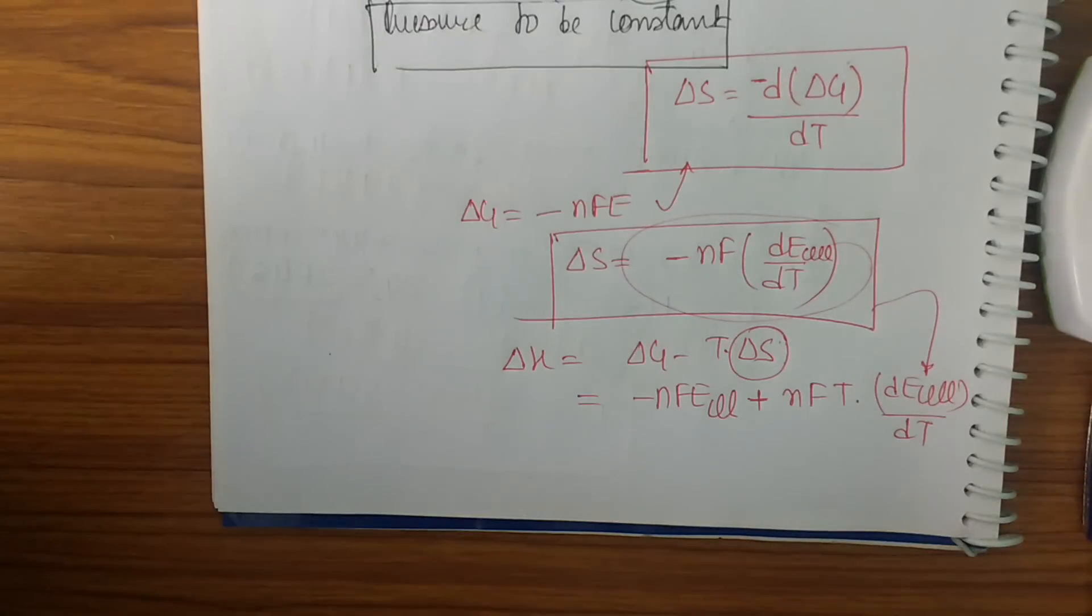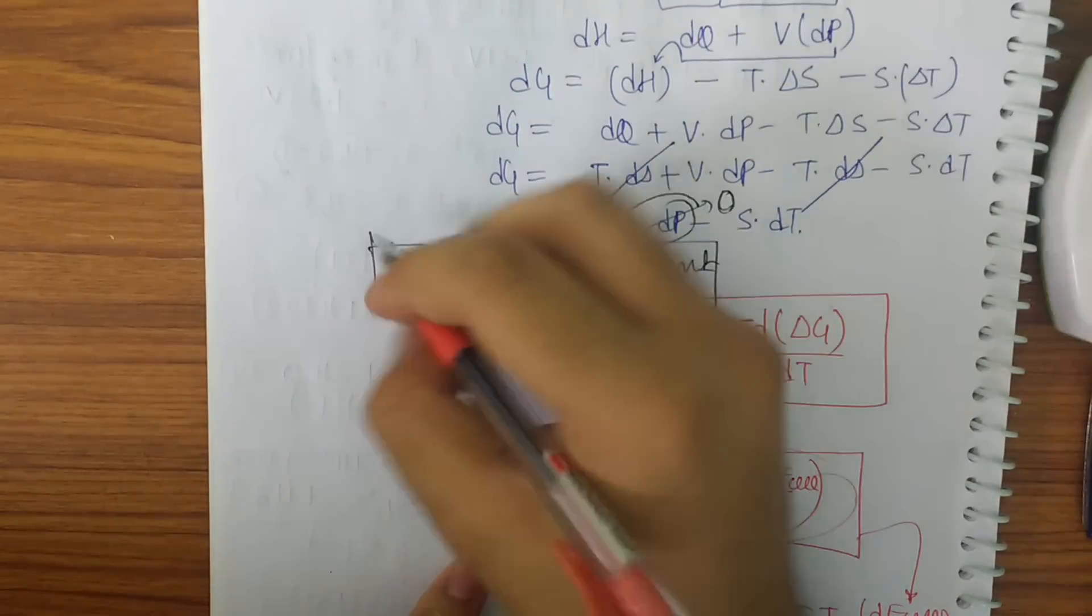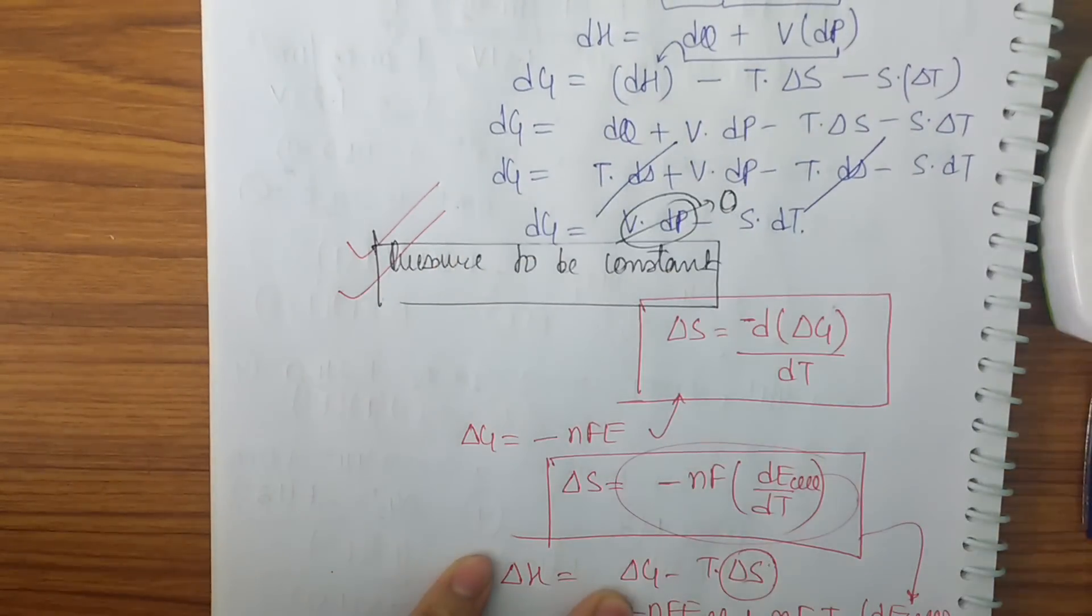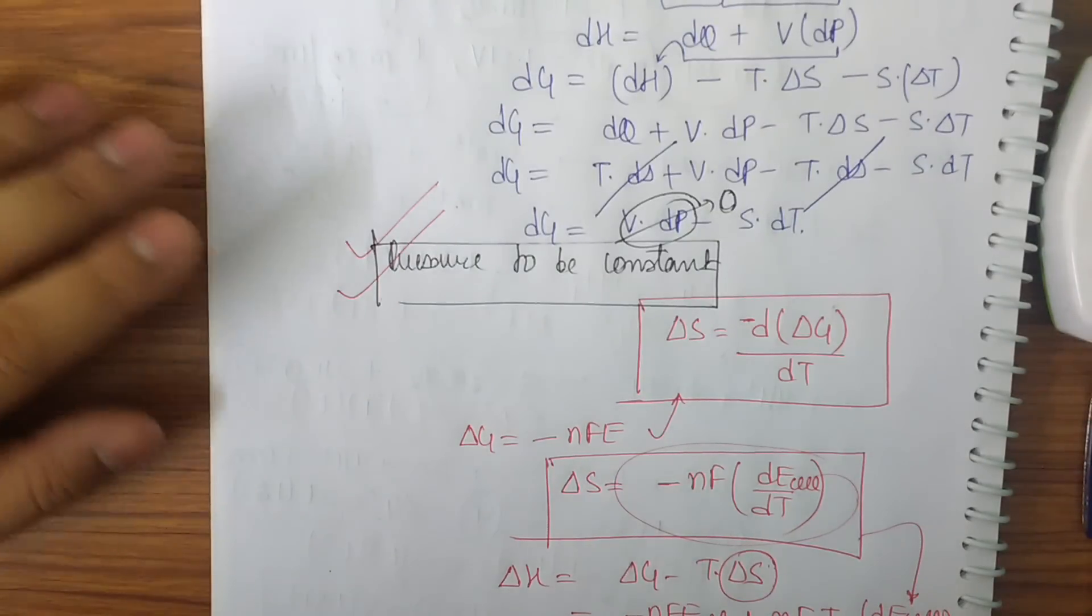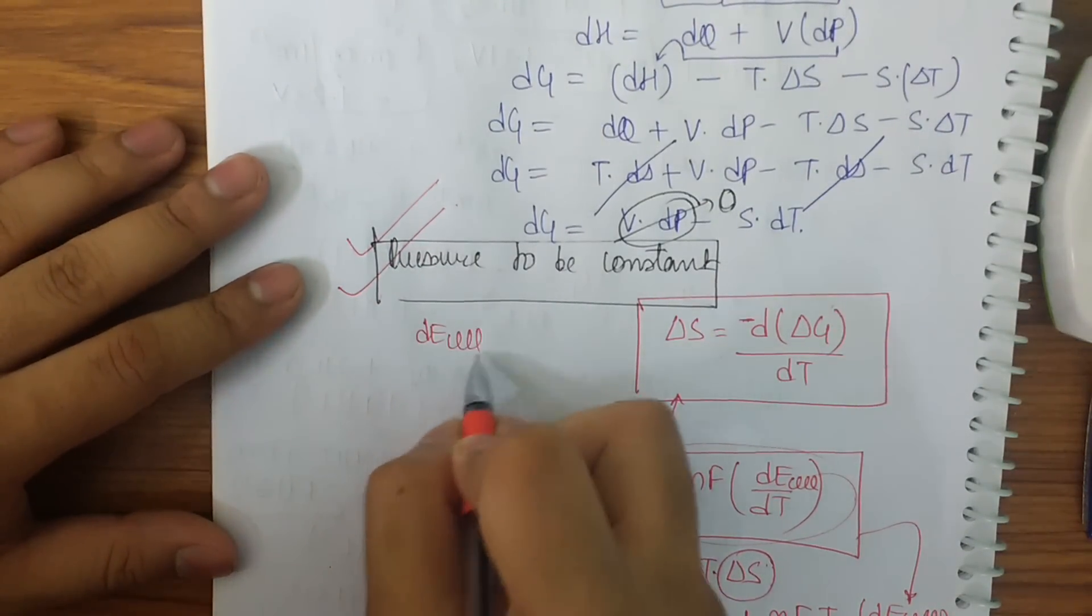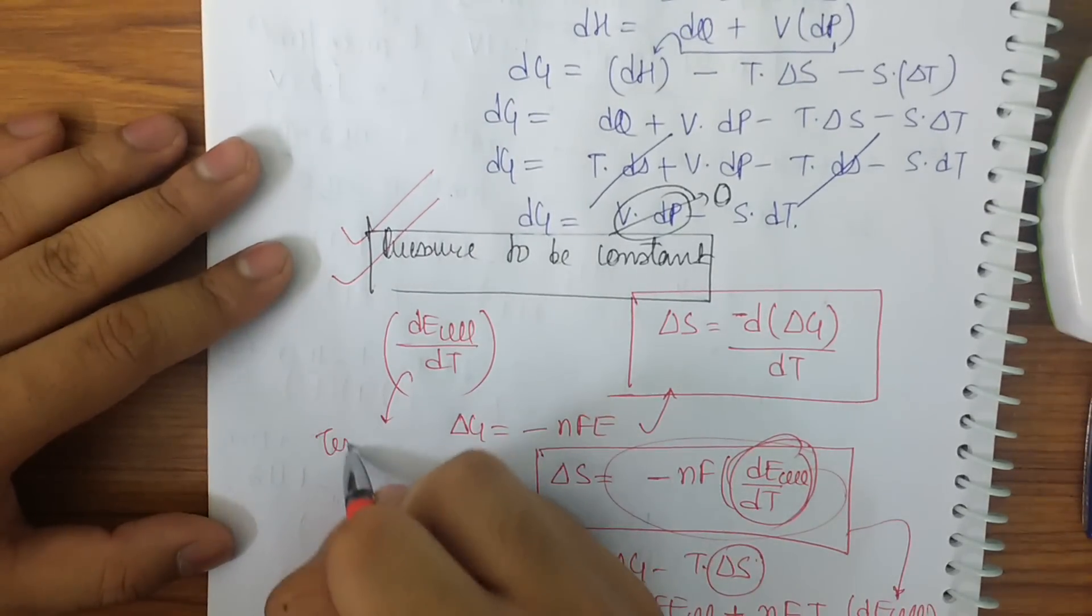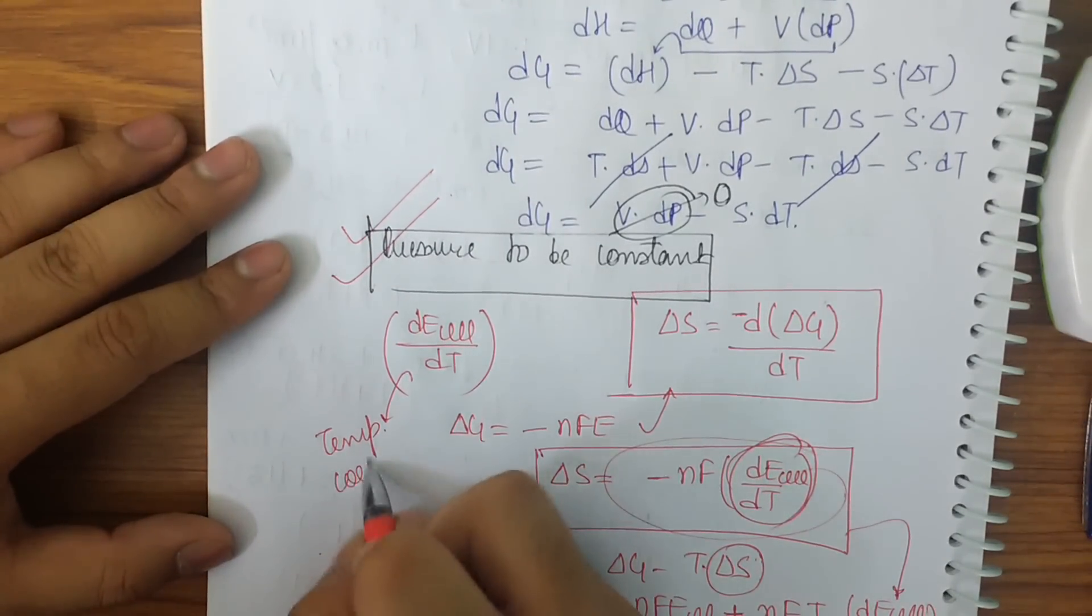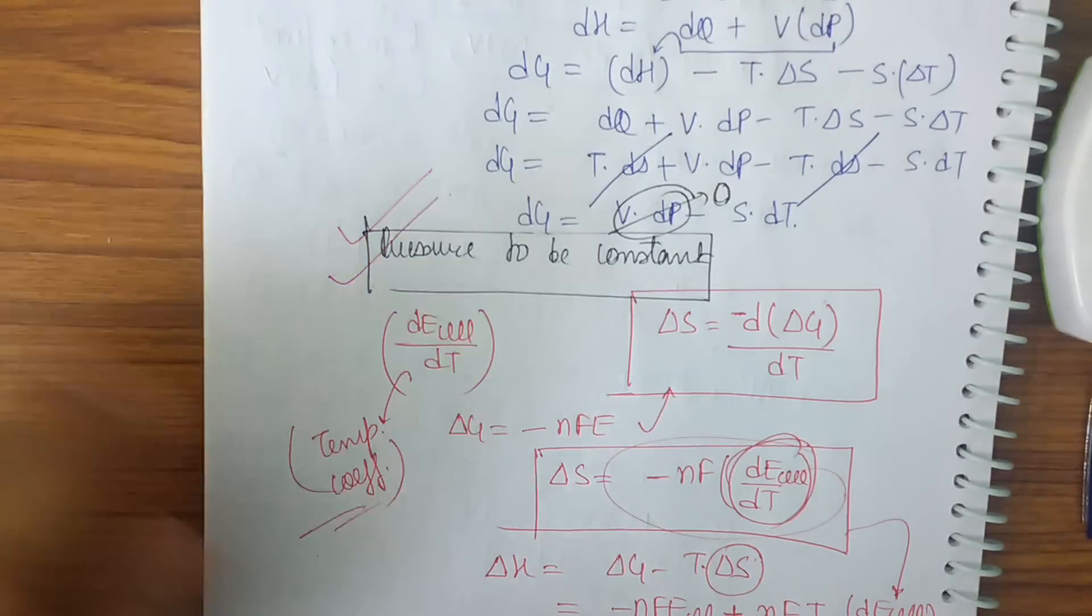So this is the basics of the thermodynamics of a cell which is very important for various examinations. So the major condition to be learned here is that the pressure has to be maintained constant. Practice it once more in your notebook because I know it's a typical topic. So now let's move on further. The DE cell by DT, that is this thing here, is known as the temperature coefficient. Sometimes it can directly be asked. Now let's move further to the Faraday's law of electrolysis and I shall be discussing some important questions on it.